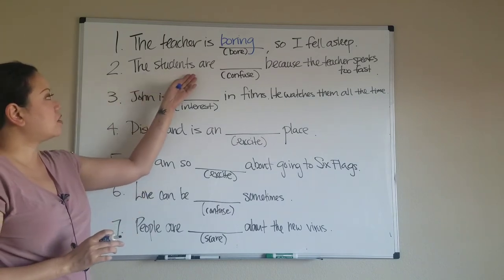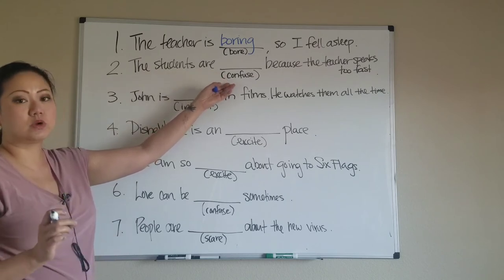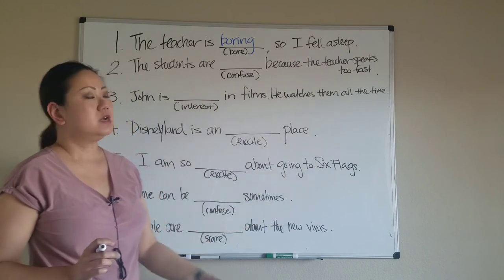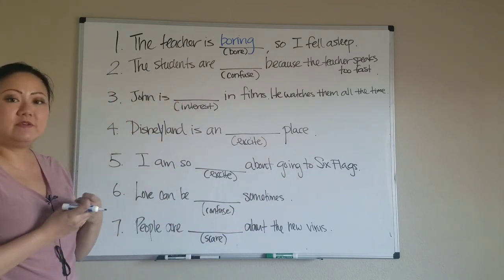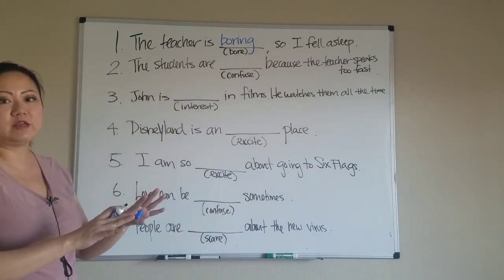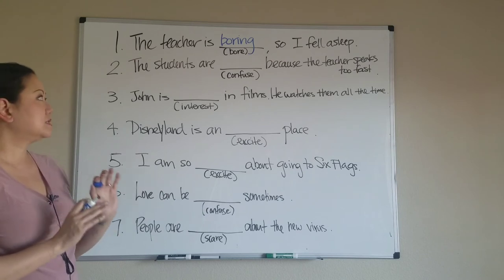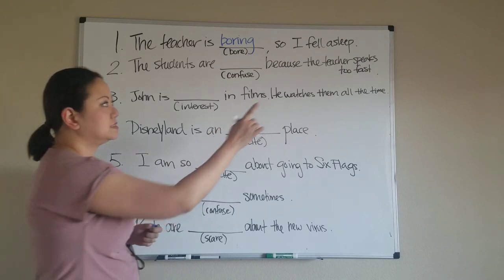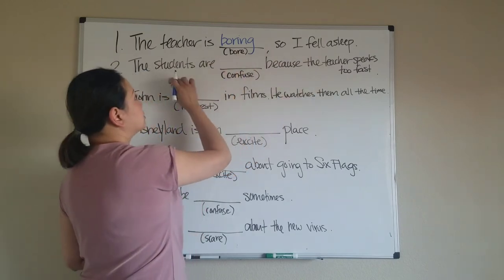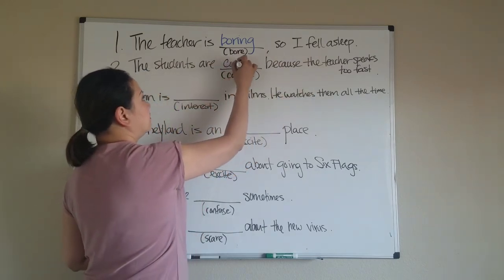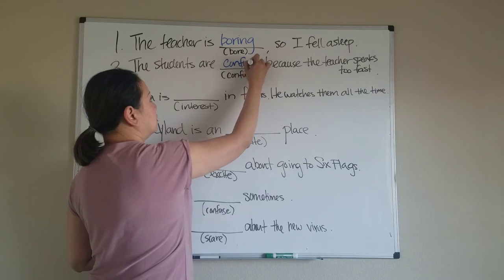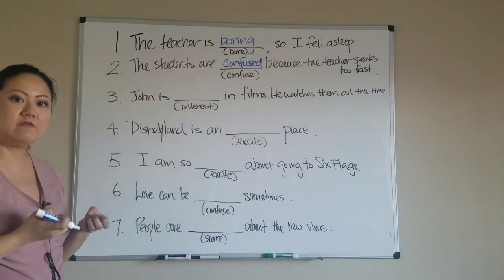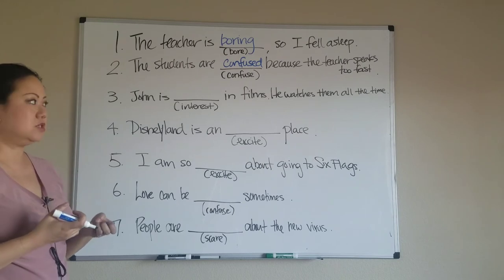Number two: 'The students are ___ because the teacher speaks too fast.' Is the students receiving the feeling or giving the feeling of confusion? The students are receiving confusion because the teacher speaks too fast. So we say: 'The students are confused,' because the students are receiving confusion from the teacher.